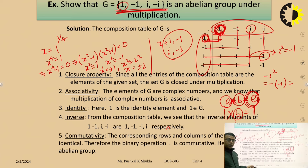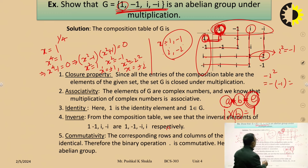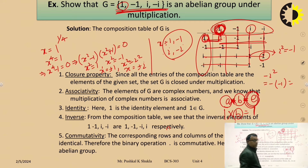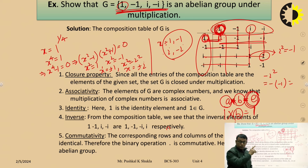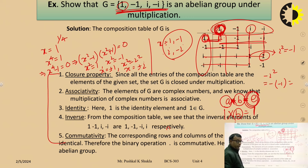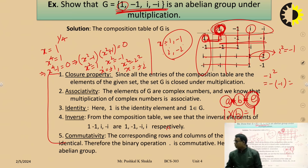Commutative property: the corresponding rows 1, −1, i, −i and the corresponding columns are the same in the composition table. Since corresponding rows and corresponding columns are the same, it follows the commutative property. So all five properties are satisfied, and we can say this is an abelian group.